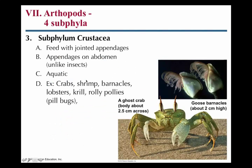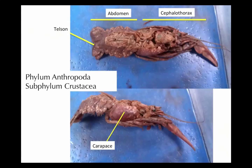The subphylum Crustacea is the one where we have our crayfish. They have hard exoskeletons. Besides the crayfish, you need to know the other groups in subphylum Crustacea: crabs, shrimp, barnacles, lobsters, and krill — tiny shrimp-like plankton. Even your roly polies or pillbugs are actually crustaceans. They just happen to live on land, but still need a moist environment. Most of the rest live in water.